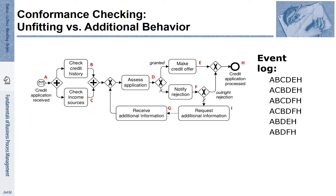There is a sequence A, B, C, D, F, I, G — that is a rejection. As well as A, C, B, D, F, H — also a rejection. We also observe a sequence A, B, D, E, H, where it seems C has been missed. And a sequence A, B, D, F, H, where C is also apparently missing.